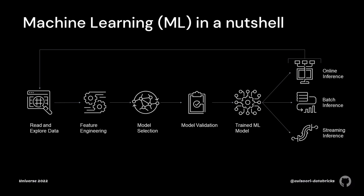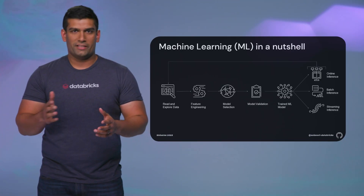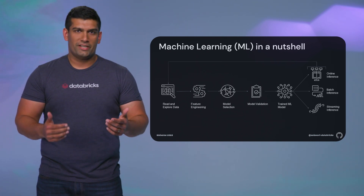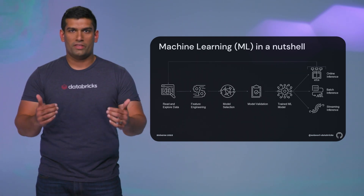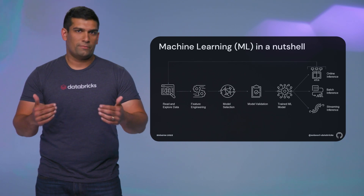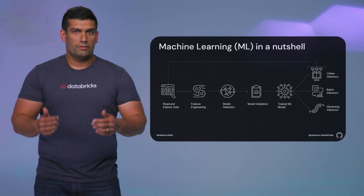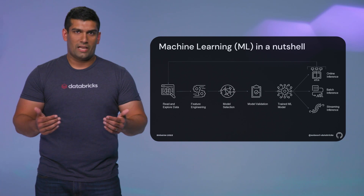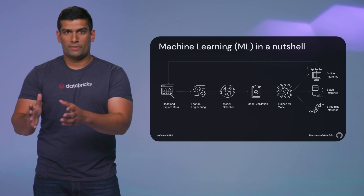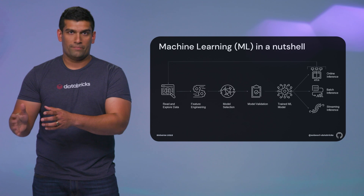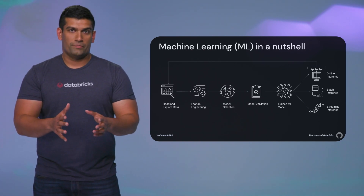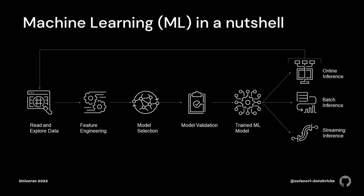Now let's talk about machine learning. In a nutshell, machine learning involves extracting patterns from data and using those patterns to make predictions on new data. It's also important to understand the machine learning life cycle. Imagine you're a data scientist at this e-commerce company. You start with the data received from an upstream process, likely a data pipeline. Then you do some exploratory data analysis and perform feature engineering to mold this data into a form that a machine learning algorithm can be trained on. Then you perform model selection.